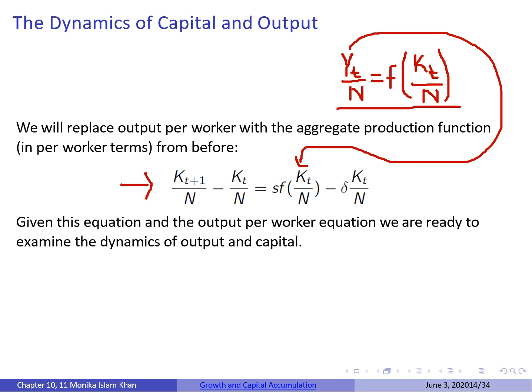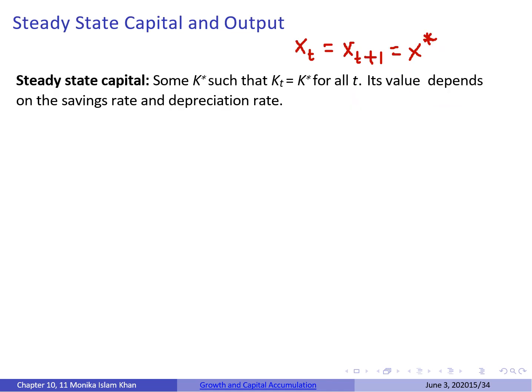Given this equation and the output per worker equation, we are ready to examine the dynamics of output and capital. Recall how we find steady state: when a variable is at its steady state, it is not growing — x at any time period equals x*. For the steady state of capital, we assume capital does not grow over time, so K_T/N = K_{T+1}/N = K* at all periods. The steady state capital will depend on the savings rate and the depreciation rate.